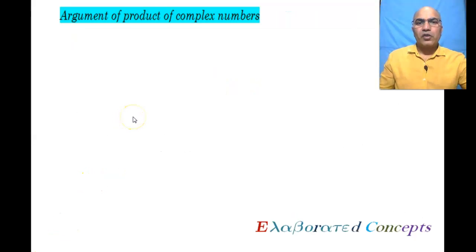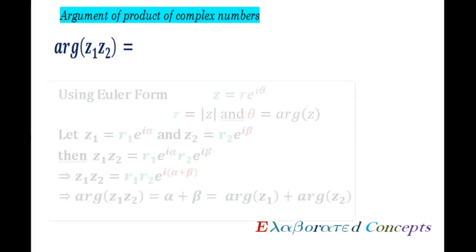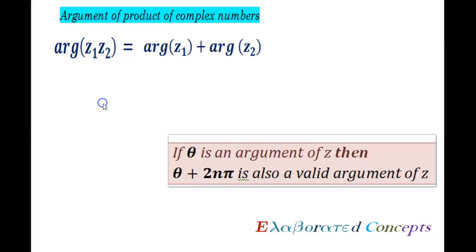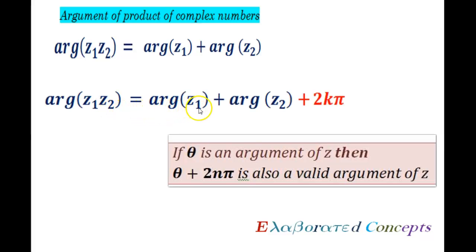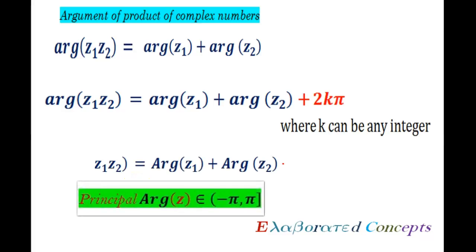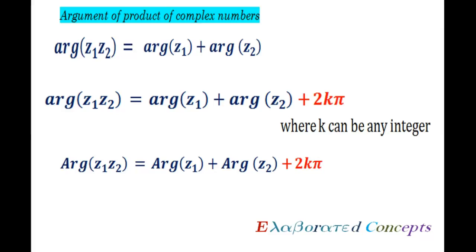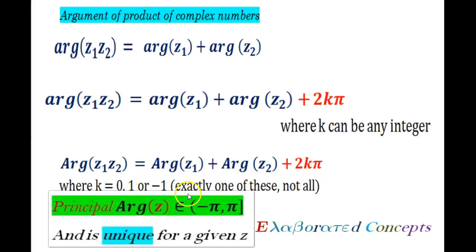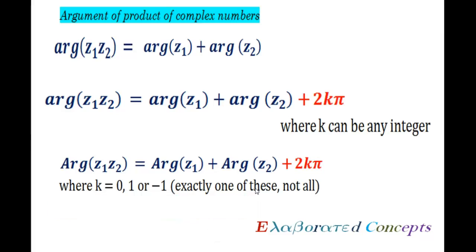Argument of product of complex numbers: argument of z1·z2 is equal to argument of z1 plus argument of z2. But since argument is a multi-valued function, the general case is argument of z1·z2 equals argument of z1 plus argument of z2 plus 2kπ, where k can be any integer. For the principal argument, k is equal to 0, 1, or minus 1 — exactly one of these, since principal argument is a single-valued function.